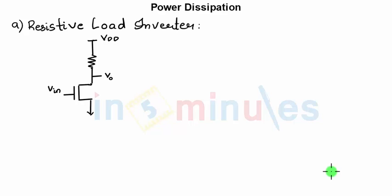If you see on the left side of your screen, there's an active device NMOS which is a driver, and there is a load resistance RL which is connected as a load. We need to find the power dissipation.